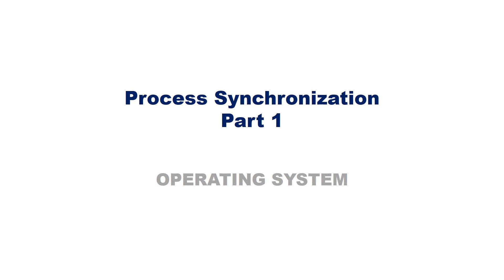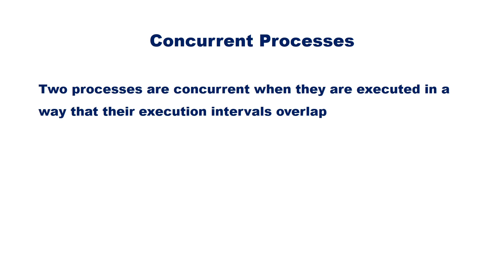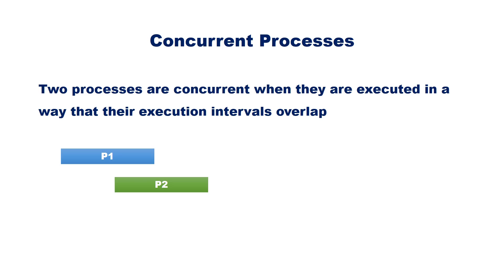In this video we are going to discuss about process synchronization. Two processes are said to be concurrent when they are executed in a way that their execution interval overlaps. Consider two processes P1 and P2. Before the completion of P1, P2 starts its execution. Hence there is a concurrency.